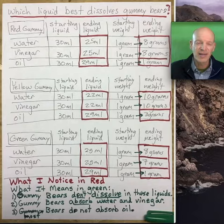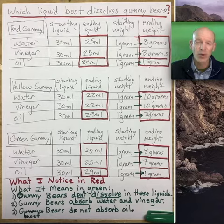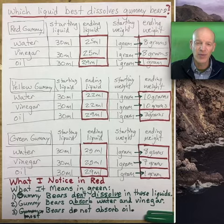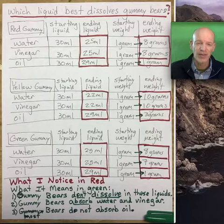That means the second thing I know is that gummy bears absorb water and vinegar. I can't say that they absorb oil very well. Only the yellow one seems to have absorbed any of the oil. The red and the green gummy did not absorb oil. So my third thing that I learned is that most gummy bears don't absorb oil.